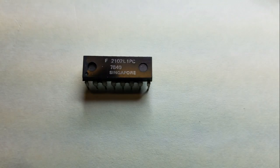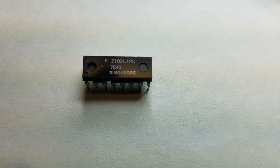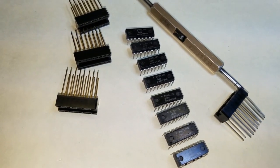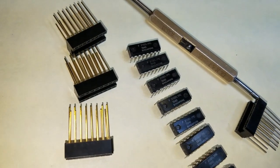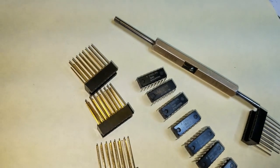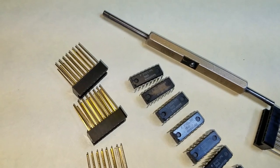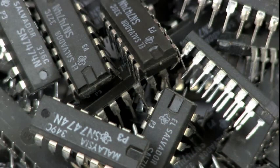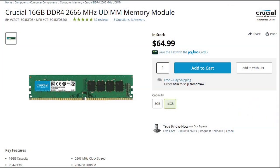Back in the day, memory was real expensive. In 1978, 2102 1Kx1 static memory chips cost $1.75 each, not including the sockets and other hardware needed to make them work. At that price, the 16GB of RAM in my current computer would cost about $1.5 billion today. Moore's Law definitely applies here.